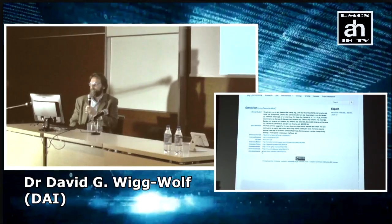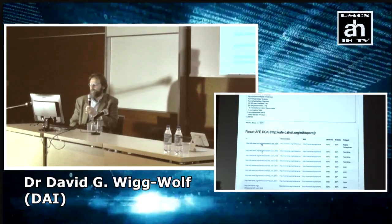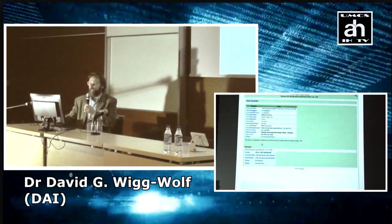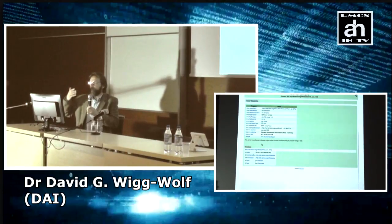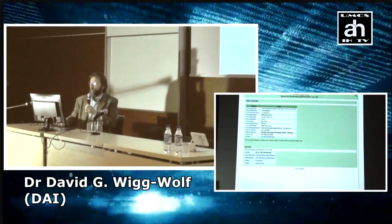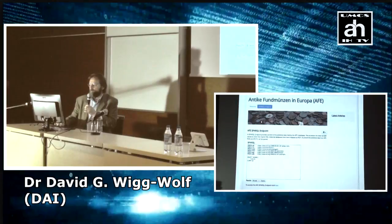If I come back and click on the address for my particular coin — we are no longer in a relational database, but this is a machine-readable description of the coin, this is how RDF works. This particular coin, AFE 1678, has the authority of Vespasian, has the denomination of a denarius, has a starting date of 75 and end date of 75. This is a machine-readable description of the coin and no longer a relational database.